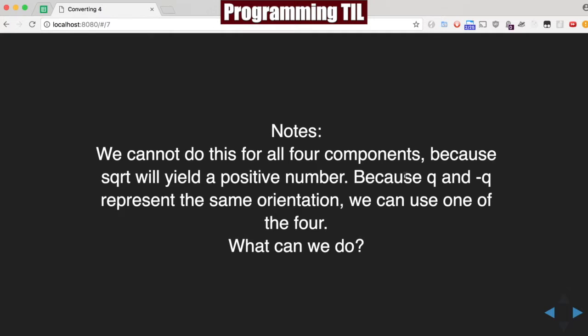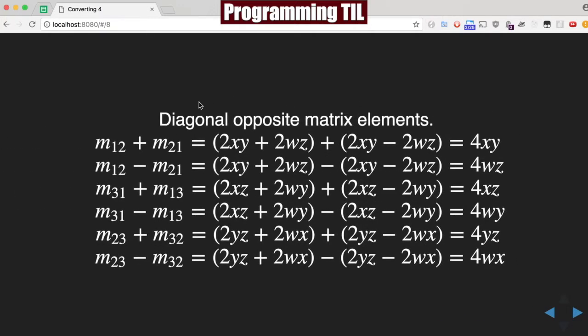What we're going to do is we're going to try to cheat a little bit. We're going to take the diagonal opposite matrix elements. So 1, 2, and 2, 1, 1, 2 minus 2, 1, 3, 1, 1, 3, 3, 1 minus 1, 3, 2, 3 plus 3, 2, 2, 3 minus 3, 2. And give us each of these little formulas here.